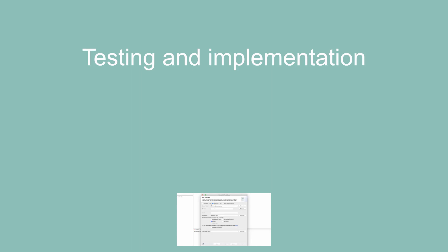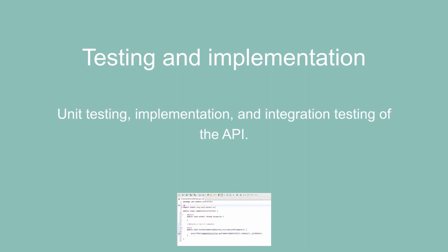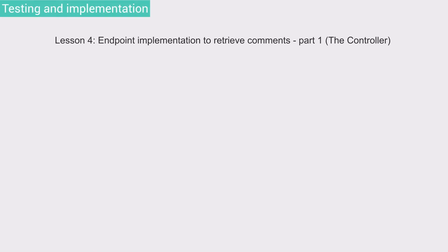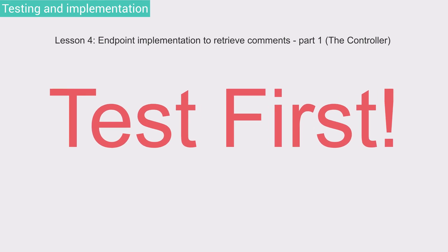The next module is Testing and Implementation. This module consists of several lessons on unit testing, implementation, and integration testing the API. In this lesson, we implement a method to return all comments of a particular post in a test-first manner — meaning, as with all implementations throughout the project, we write unit tests before writing a single line of logic.